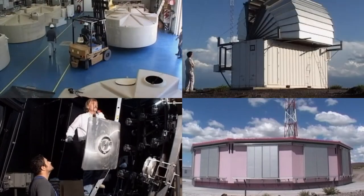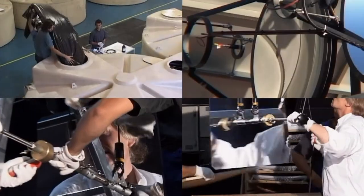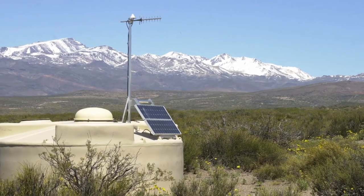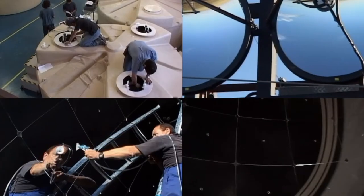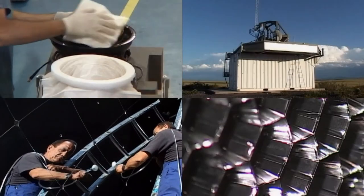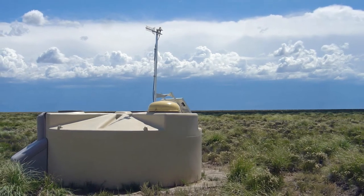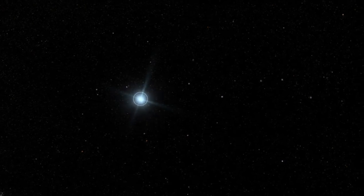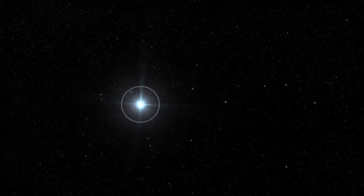And here's the Pierre Auger Observatory in Argentina. It doesn't even look like a telescope. Pierre Auger consists of 1,600 detectives, spread over 3,000 square kilometers. They catch the particle fallout of cosmic rays from distant supernovas and black holes.